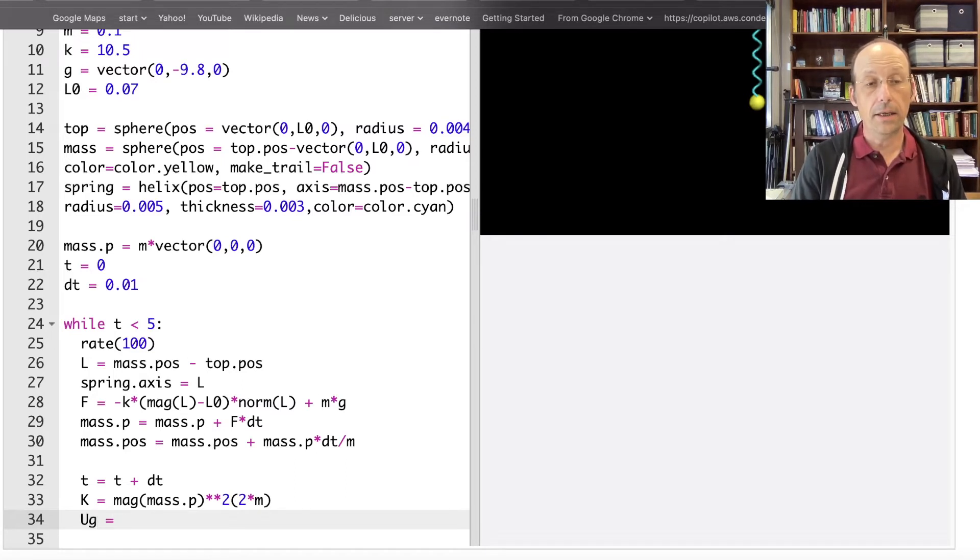UG is going to be equal to Mgy. So let's just do it like that. I don't care where the origin is. I'm just going to say M times the magnitude of G, right? I can't use negative. I can't use G because G is a vector, times mass dot POS dot Y.